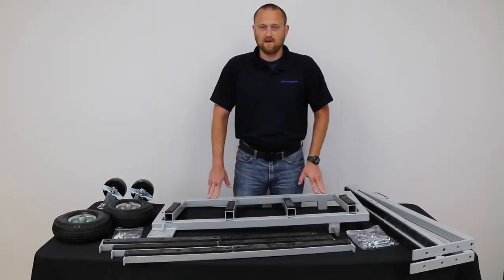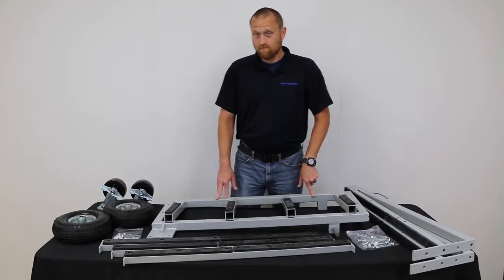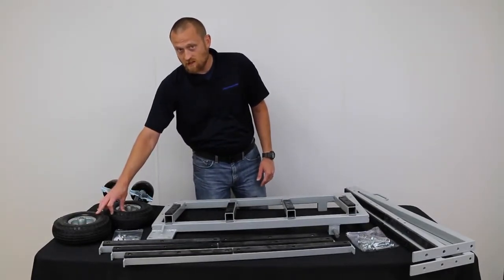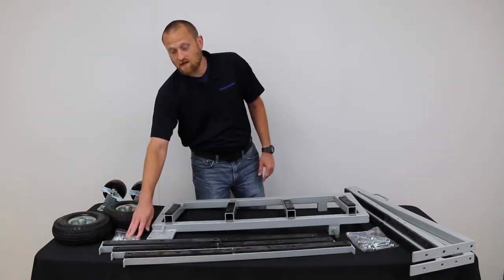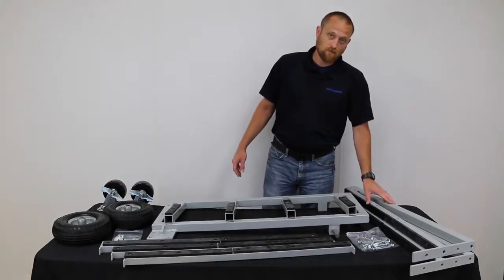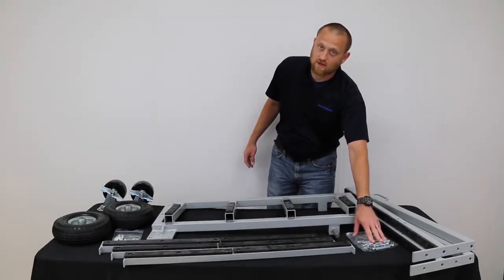Parts you need to assemble your single-sided shop cart are the base frame, two swivel with brake casters, two 10-inch tires, hardware for the tires and the casters, three cross support braces, two uprights, and hardware for your uprights and cross support braces.